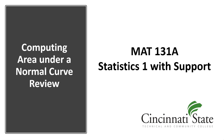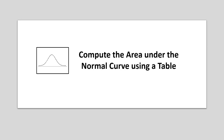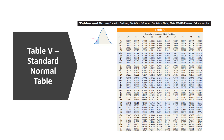Computing the area under the normal curve — a review. The lesson objective is to compute the area under the normal curve using a table and also using StatCrunch. We'll begin with the table. This video is a quick review on how to find the area under the normal curve using Table 5, the standard normal table. A standard normal distribution means the mean is 0 and the standard deviation is 1.